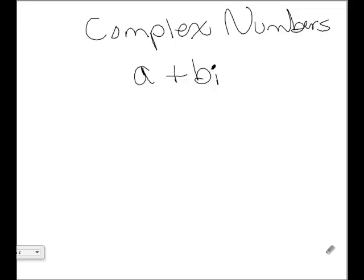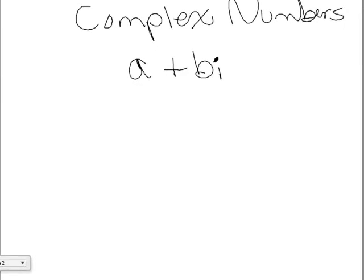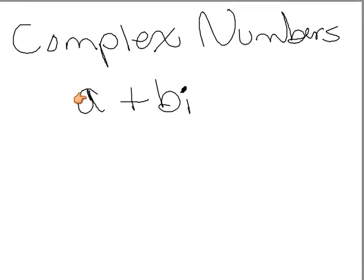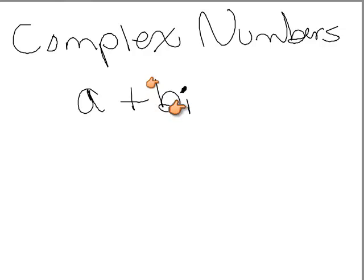Today we're going to be talking about complex numbers. Complex numbers are numbers which have two parts to them. They have a real number part, which we're going to call A here. And then they also have what's called an imaginary part, where you have some number, we're going to call it B, being multiplied by what's called an imaginary number, i.